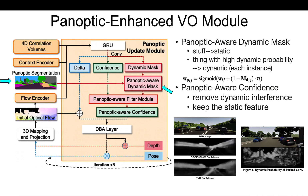In the Panoptic Enhanced VO module, we add panoptic information to the dynamic mask. Specifically, stuff segmentation will be set as static, while foreground objects with high dynamic probability will be set as dynamic. The confidence and panoptic-aware dynamic mask are passed through a Panoptic Aware filtering module to obtain the panoptic-aware confidence. As shown in the figure, this confidence can remove dynamic interference and keep the static features.